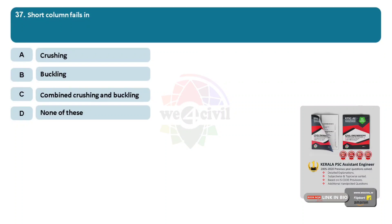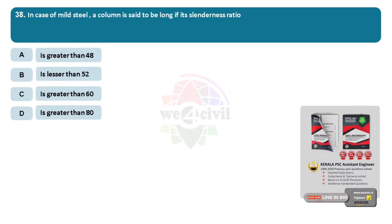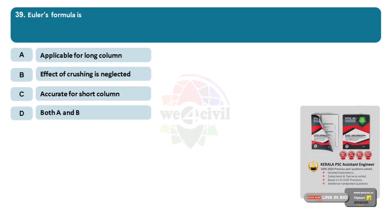Question 37: Short column fails in? Options: A, crushing. B, buckling. C, combined crushing and buckling. D, none of these. Answer: Option A, crushing. Question 38: In case of mild steel, a column is said to be long if its slenderness ratio is? Options: A, greater than 48. B, lesser than 52. C, greater than 60. D, greater than 80. Answer: Option D, greater than 80. Question 39: Euler's formula is? Options: A, applicable for long column. B, effect of crushing is neglected. C, accurate for short column. D, both A and B. Answer: Option D, both A and B.